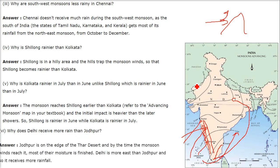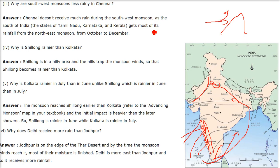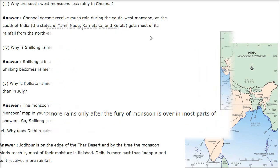Why does Delhi receive more rain than Jodhpur? Jodhpur is actually on the edge of the Thar Desert. By the time the monsoon winds reach Jodhpur, the moisture is almost finished. Delhi is further east, and therefore it receives more rainfall as compared to Jodhpur.